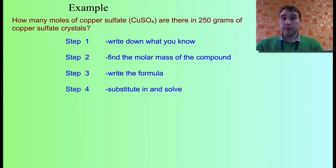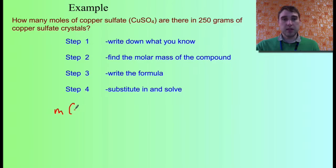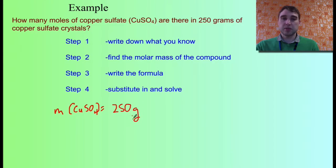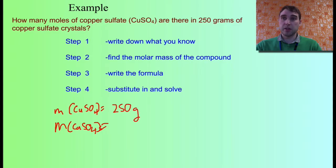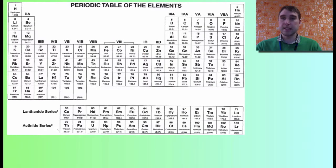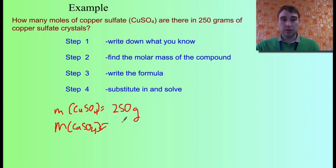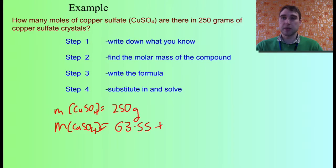Let's look at another example. This one asks: how many moles of copper sulphate are there in 250 grams of copper sulphate crystals? First step: write down what we know — the mass of copper sulphate is 250 grams. Make sure this is always in grams. Next step is to find the molar mass. The molar mass of copper sulphate includes copper — from the periodic table that's 63.55 — plus the molar mass of sulphur.